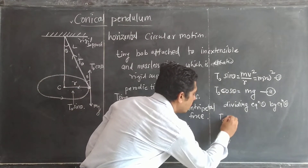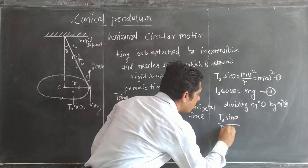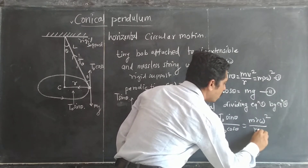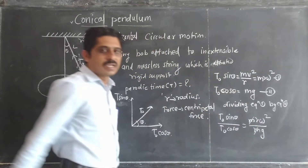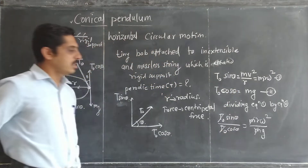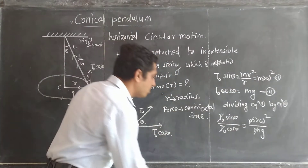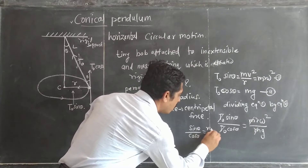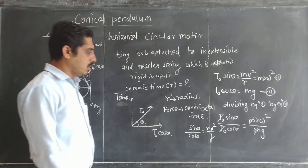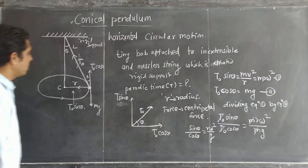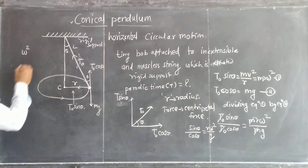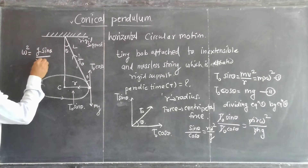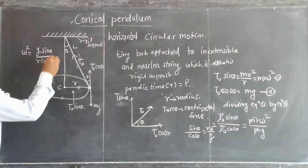Dividing: T₀ sin theta over T₀ cos theta equals mr·omega² over mg. Here mr cancels and T₀ cancels, giving sin theta over cos theta equals r·omega² over g. Therefore omega² equals g·sin theta over r·cos theta.